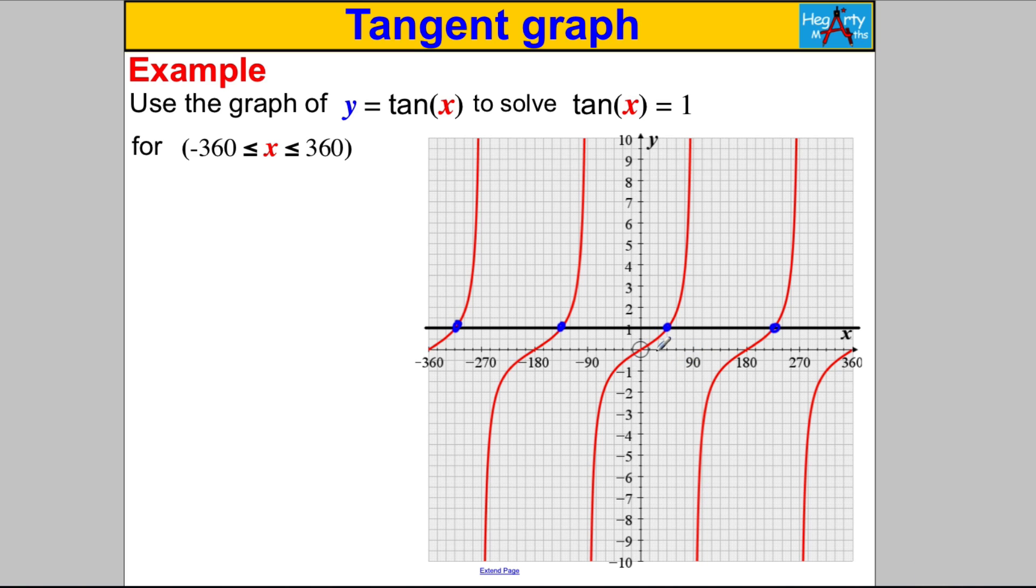We're 1, 2, 3 squares forward from 180, so 180 plus 45 is going to be 225. There's another one. Now this one here is 1, 2, 3 squares to the right of -180, so if we add on 45, -180 add on 45 is going to be -135. And here we're 1, 2, 3 squares forward from -360, so add on 45, we're going to get -315.